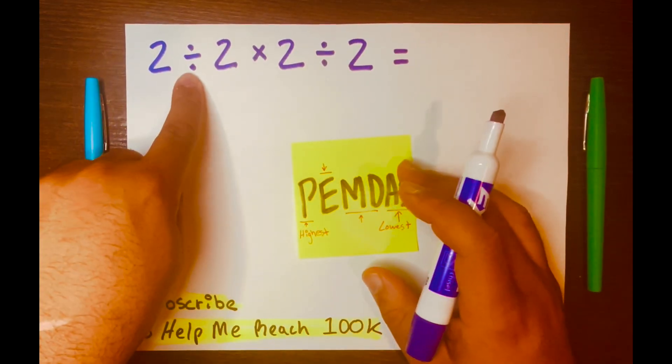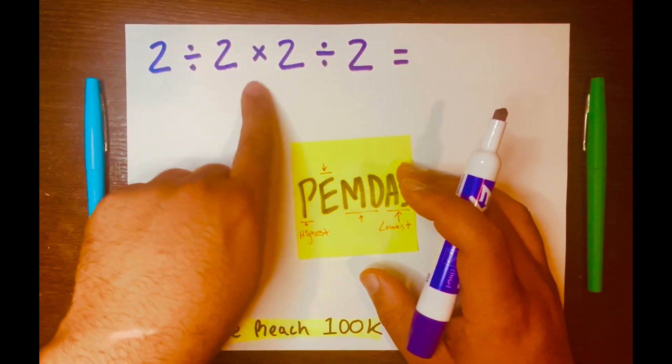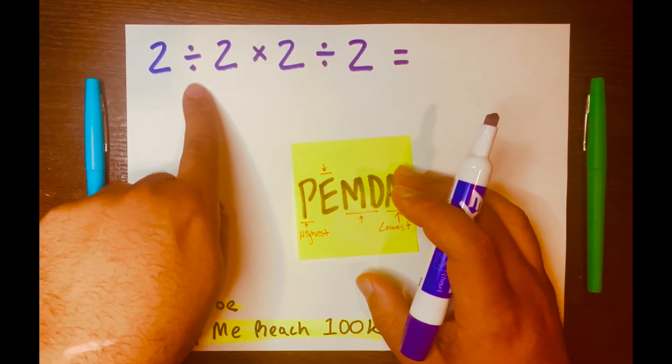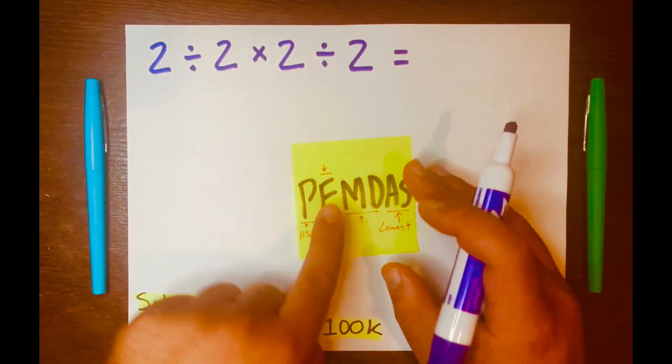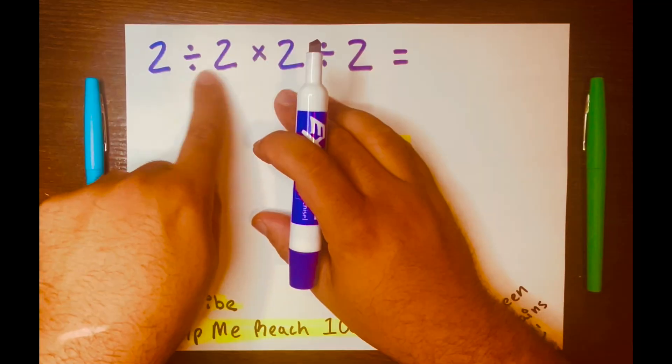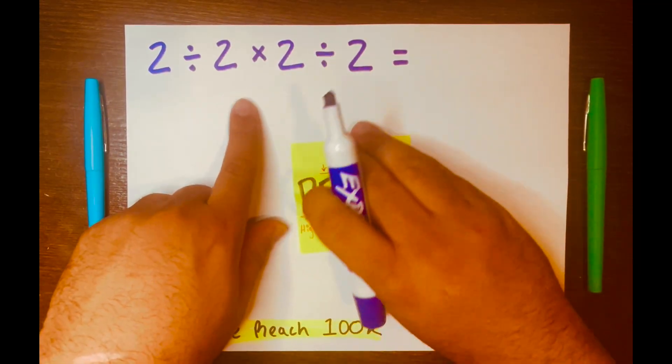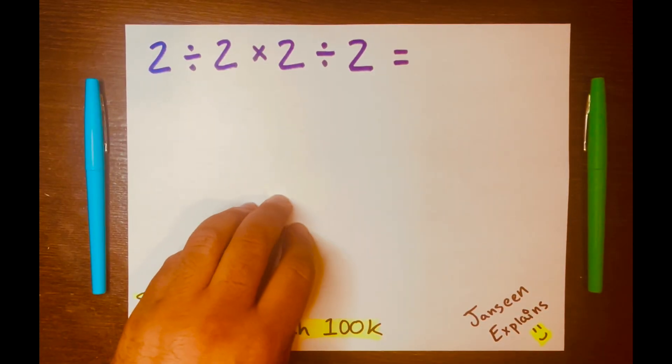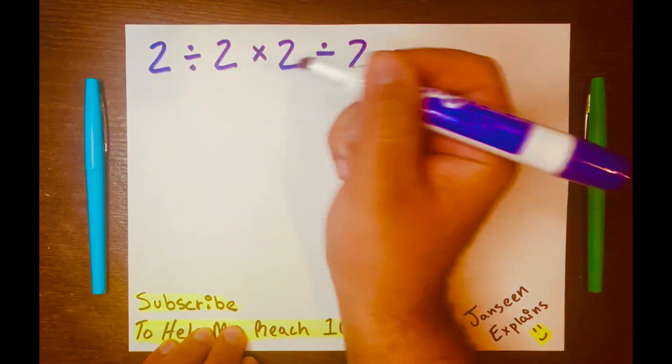So looking at this math problem, we don't start with multiplication. We start with division. Because again, we work from left to right according to its levels. So 2 divided by 2 will go first. And that gives us 1.